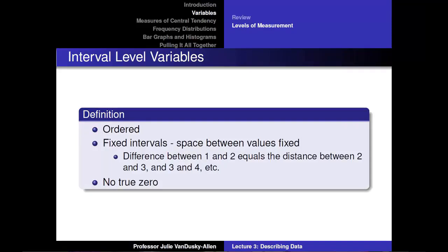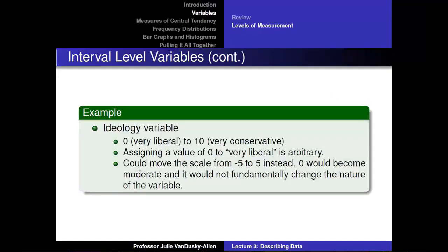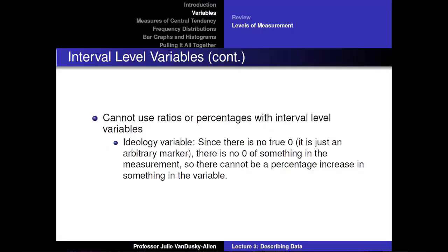Interval-level variables are ordered and the spaces between categories are fixed — the space between 1 and 2 equals the space between 2 and 3. However, interval-level variables have no true zero. For example, ideology could be an interval-level variable ranging from 0 (extremely liberal) to 5 (moderate) to 10 (extremely conservative), but the 0 is artificial — we could shift the scale from −5 to 5 and the nature of the variable would not fundamentally change. Because there is no true zero, we cannot use ratios or percentages with interval-level variables.